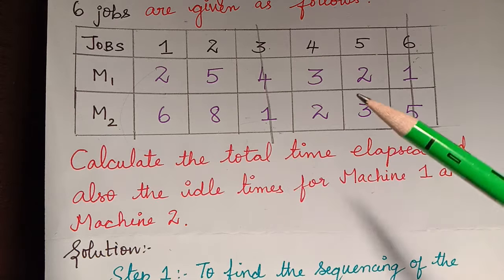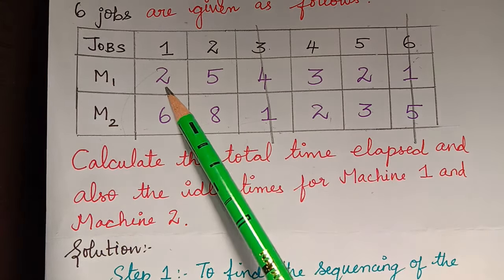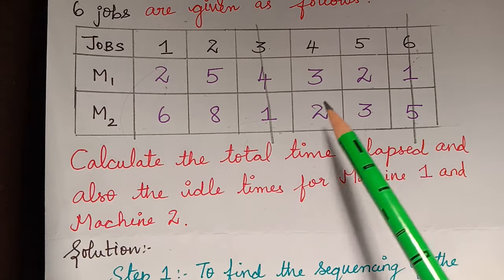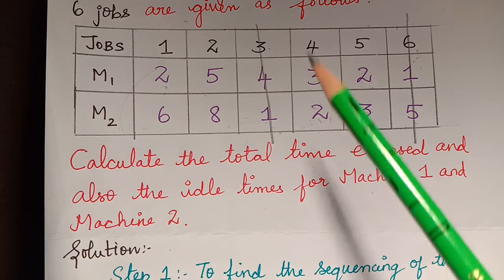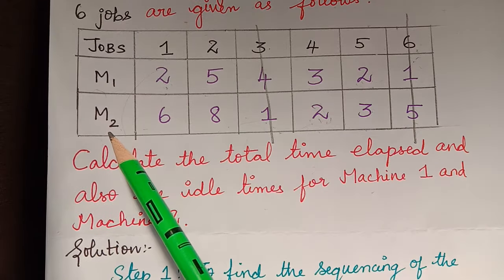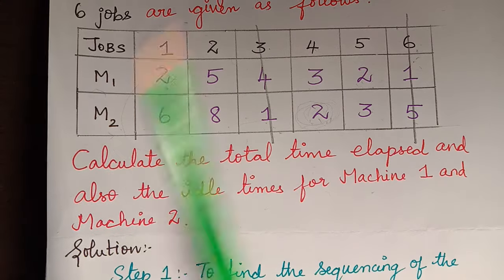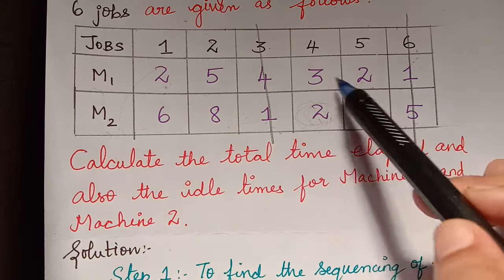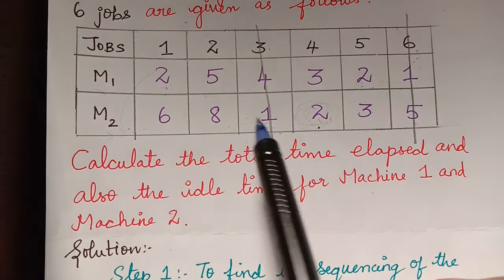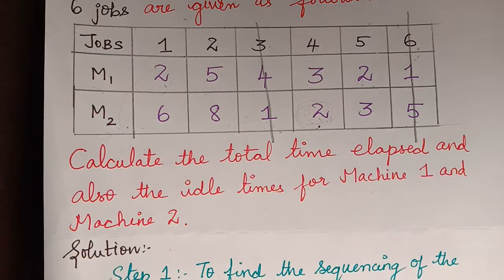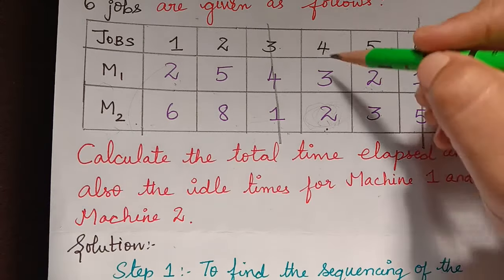Next, we check for the next least value among the remaining processing times. There are three values of two, so two is the least and there are three of them. Two of the twos are from machine one and one two is from machine two. Since the two from machine two is alone in a different machine, the corresponding job is four, and we write job four under machine two, then strike it off.